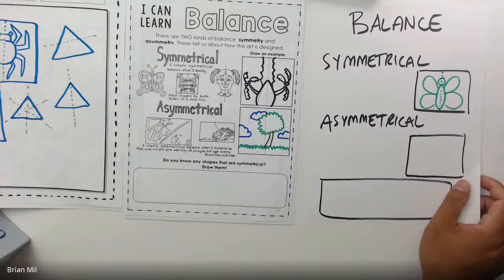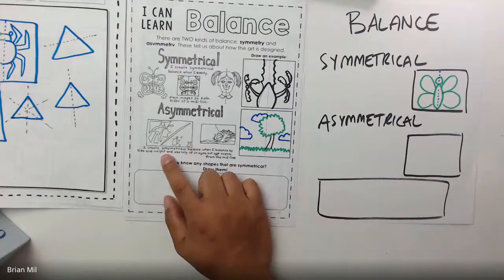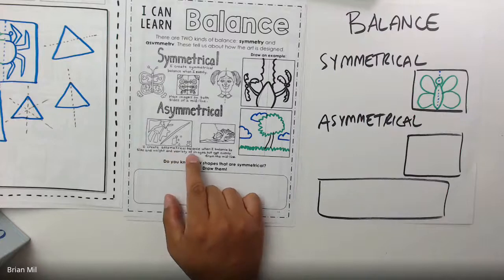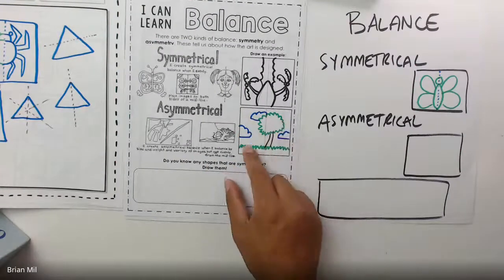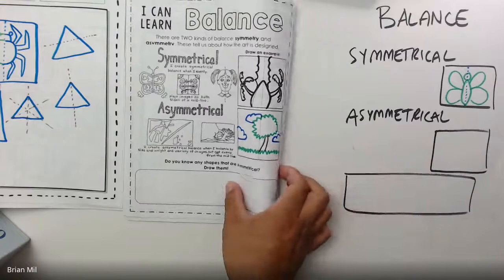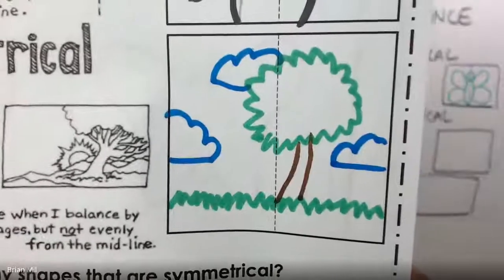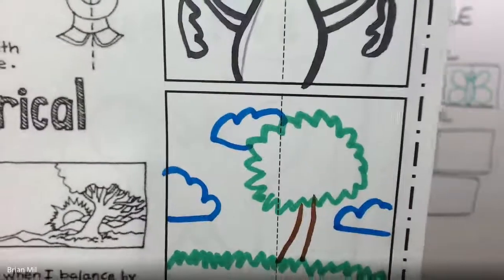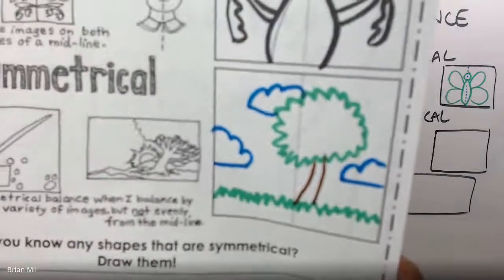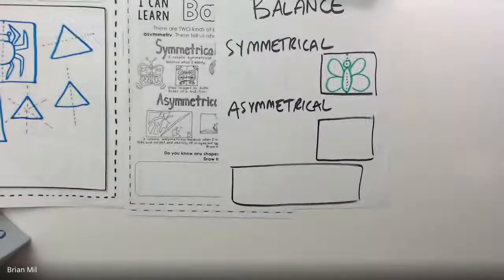Let's talk about asymmetry. When something is asymmetrical, it doesn't mirror on the other side. It says: 'I create an asymmetrical balance when I balance size, weight, and variety of images but not evenly from the midline.' Here on this square, a tree could be symmetrical, but look where I put it — a little off center, not in the middle. And I put three clouds in random spots, so it's not symmetrical either. That is my example of asymmetry.